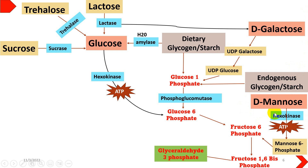Another feeder pathway involves D-mannose. D-mannose is a 6-carbon monosaccharide and is the epimer of glucose at carbon number 2. Hexokinase enzyme acts on it, utilizing one ATP, to convert it into mannose-6-phosphate. That mannose-6-phosphate is then converted into fructose-6-phosphate, which is an intermediate of glycolysis. From there it proceeds to fructose-1,6-bisphosphate, glyceraldehyde-3-phosphate, and so on. So one ATP is also utilized in this feeder pathway.